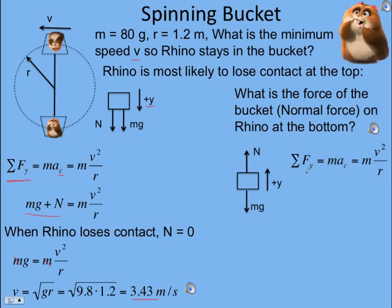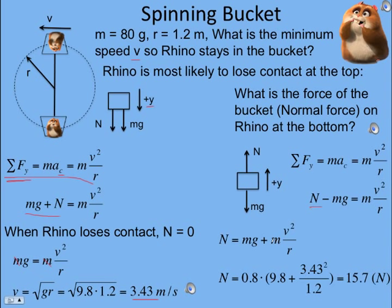Newton's second law, sum of the forces in the y equals ma, the same thing we had before. I'm using v squared over r because we know v is 3.43 meters per second. The normal force is in the positive direction and weight is negative. In this case, the normal force has two jobs: it is holding up Rhino's weight and causing the acceleration. Whereas at the top, weight and normal force together were causing the acceleration.